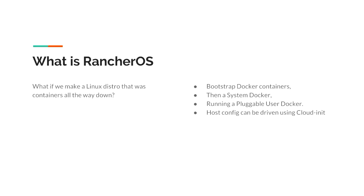RancherOS was an experiment made by Darren and his team at Rancher, where they took the idea of a micro-distro and said: what happens if everything is a container? There's a container for DHCP, a container for NTP, a container for UDEV, and even a container image for a user Docker. That means what the user interacts with is actually a containerized thing on top of your micro Linux, giving you fun things like being able to change what version of Docker you're running.